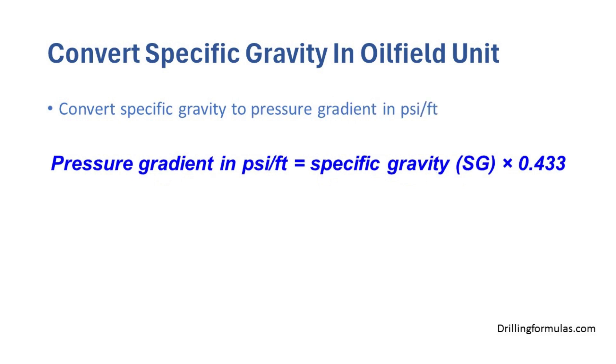Convert specific gravity to pressure gradient in psi per foot. Pressure gradient in psi per foot is equal to specific gravity multiplied by 0.433.